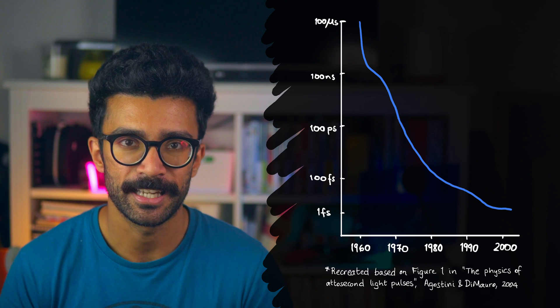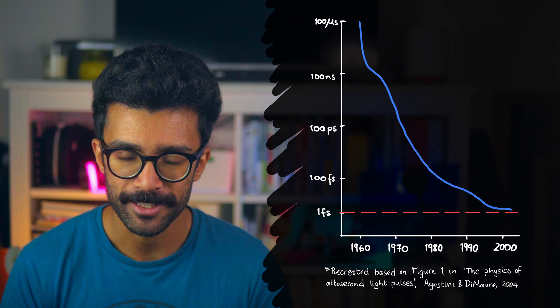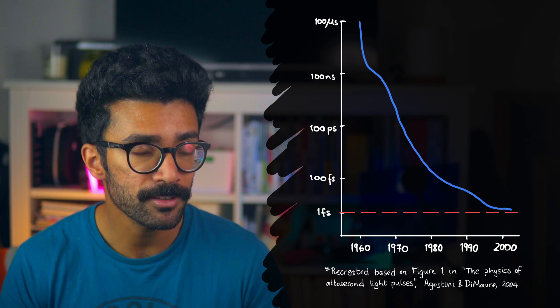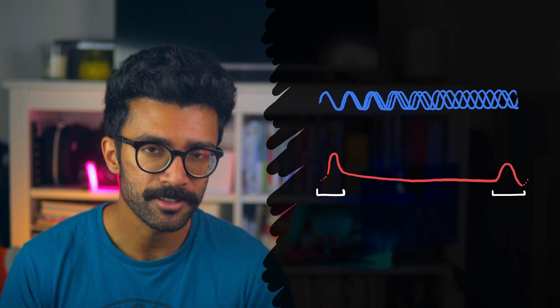Scientists managed to get down to the femtosecond level, but more and more limits were being reached, both in the physics of what was possible using known methods, as well as our understanding of the physics in the first place. To create narrower and narrower pulses, we have to add together more and more frequencies.